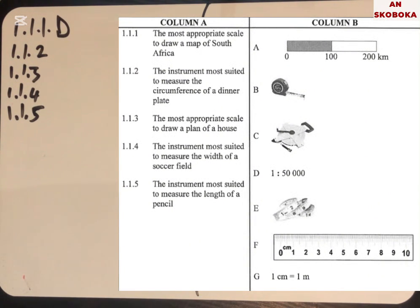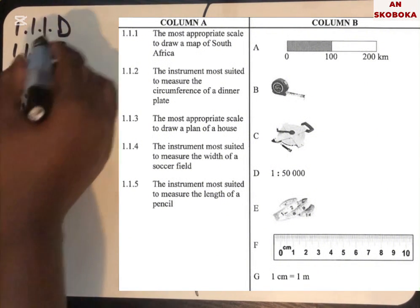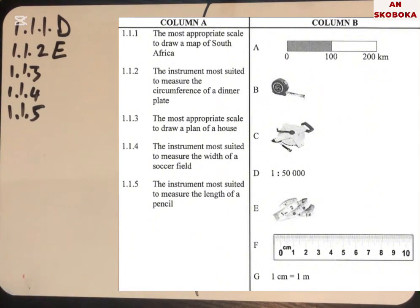The next question asks for the instrument most suited to measure the circumference of a dinner plate. The answer is E — that is a tape measure. You can use a tape measure for this.